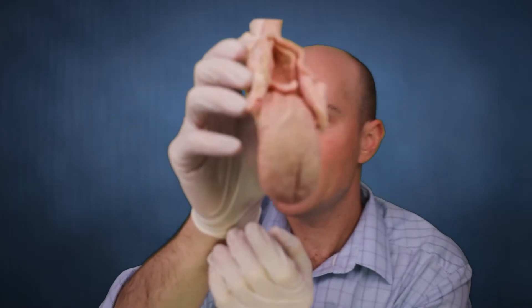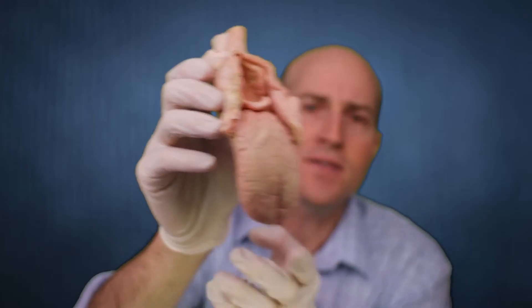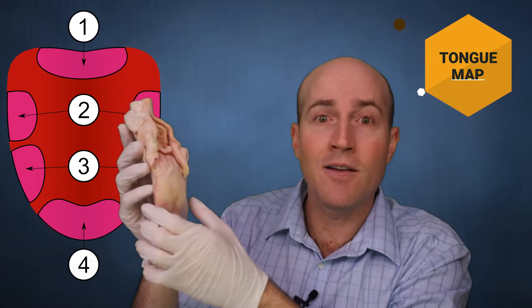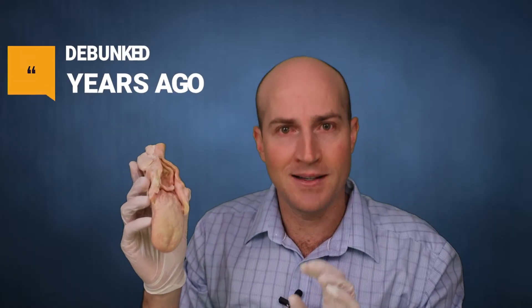Now, this is the human tongue. Just to point out, all taste sensations can come from all regions of the tongue. You may have seen when you were young or at school that there was a tongue map where we had sweet in the front and sour on the sides. Well, that's completely incorrect. Some areas can be more sensitive to others, but that old model was debunked years ago.